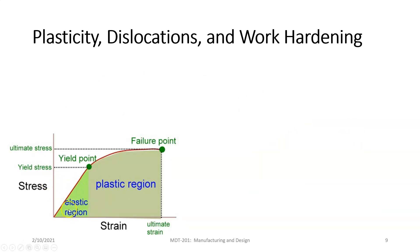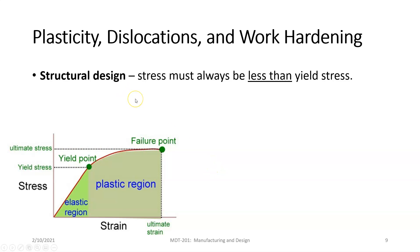The elastic region, plastic region, yield stress or yield point, ultimate stress at the peak, and failure point at the end. Structural design must always be less than yield strength — you don't want to be in a building or a car where forces exceed the yield stress, because that means things are bending and not coming back. If you've been in an accident and the chassis or metal panel bends, that means the force of impact exceeded the yield stress.